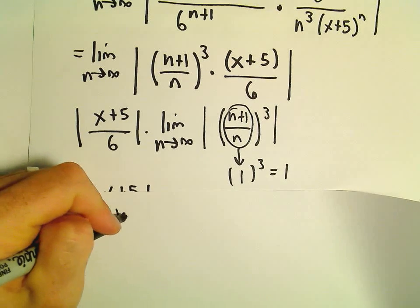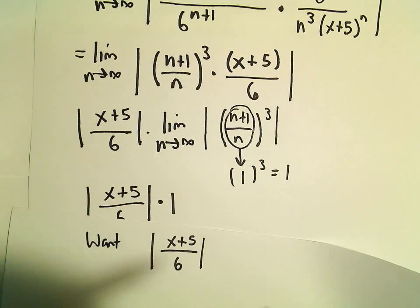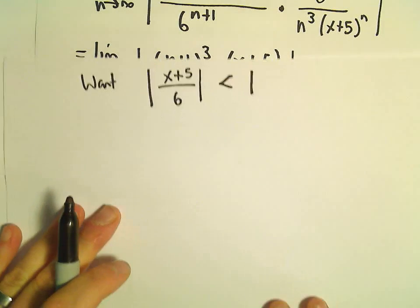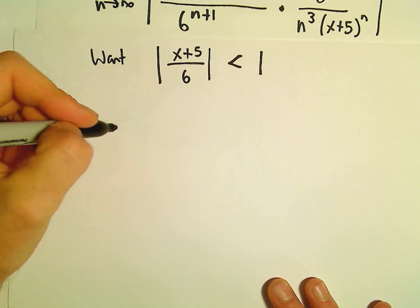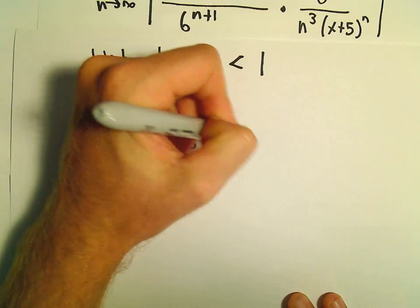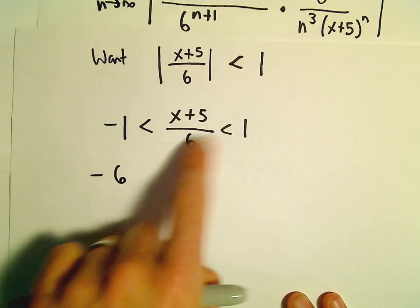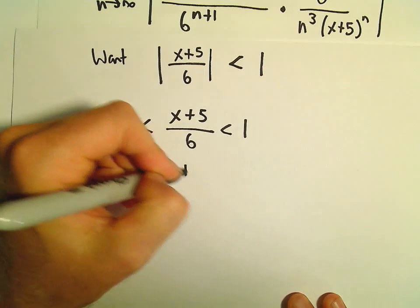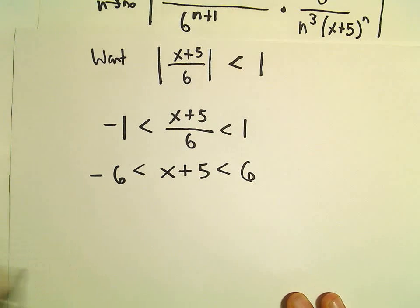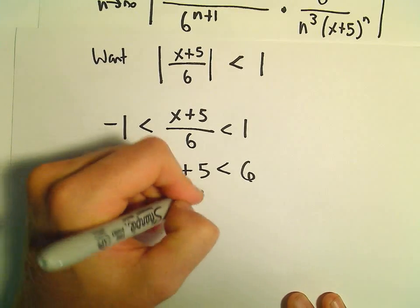What we want is the absolute value of x plus 5 over 6 to be less than 1. So now we've got our absolute value inequality to solve: negative 1 less than x plus 5 over 6 less than positive 1. If we multiply all parts by 6, we get negative 6 less than x plus 5 less than positive 6. And now if we subtract 5, we'll get negative 11 less than x less than positive 1.